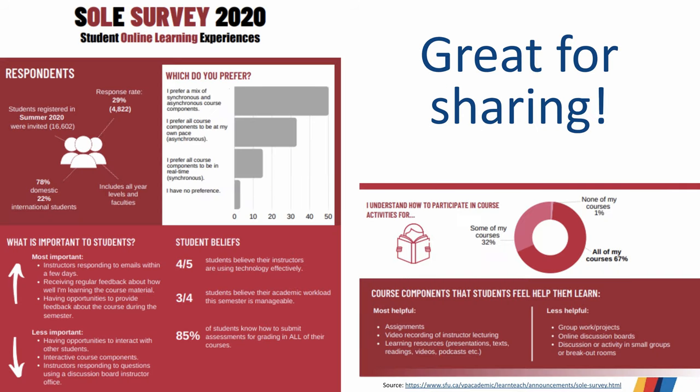A well-crafted infographic is much more likely to have a broad public impact than a research paper, for example. What we recommend is you do both — write your academic paper or article, and then create an infographic that links back to your paper. This also facilitates public scholarship via sharing on social media platforms that privilege images.